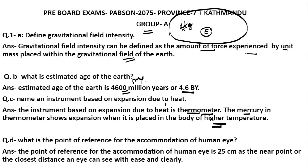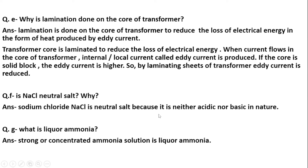What is the point of reference for the accommodation of the human eye? The point of reference for the accommodation of the human eye is 25 centimeters — the near point. This is the closest distance at which the eye can see clearly and with ease, without strain or stress.